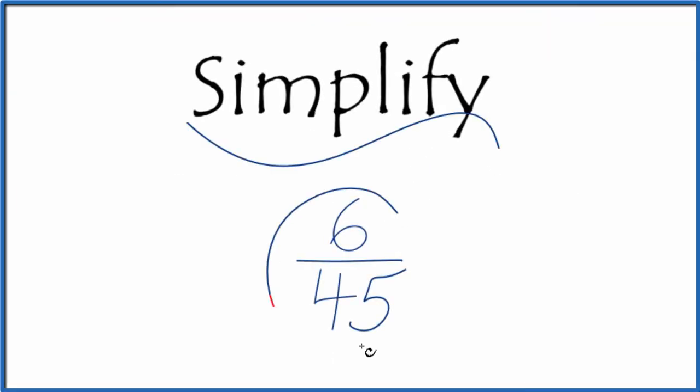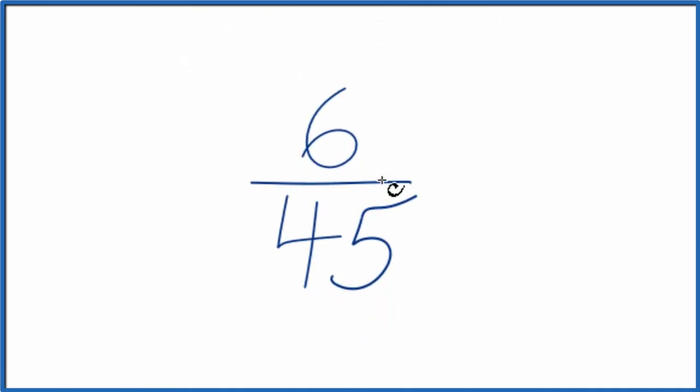Let's simplify the fraction 6/45. Here's what we're going to do. We want to find another fraction that's equal to 6 over 45, has the same value, but is reduced to its lowest terms.